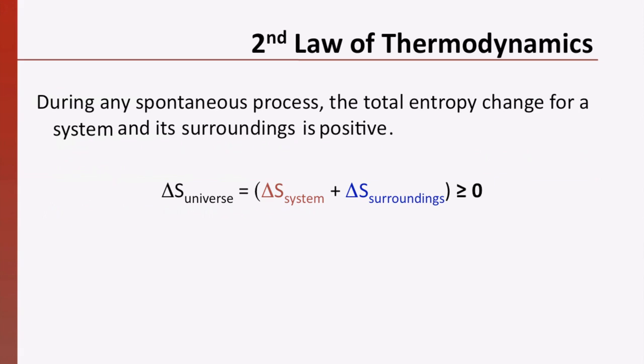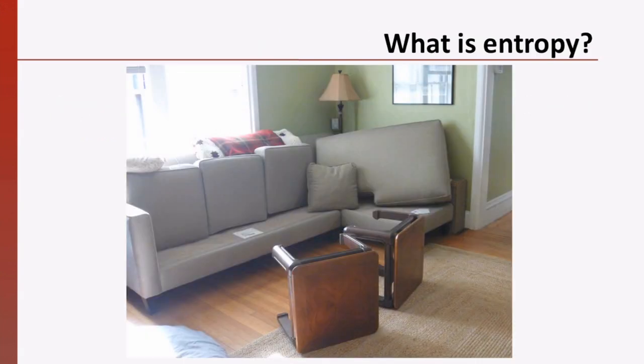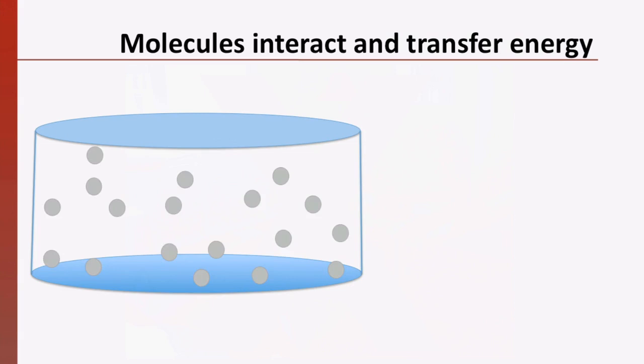The second law of thermodynamics states that during any spontaneous process, the total entropy change of a system and its surroundings is positive. In other words, the entropy of the universe, that is, the system plus surroundings, can only increase. But what is entropy? Is entropy a magical force that overturns your furniture and creates havoc in your office or home? No. Entropy is a measure of the number of ways energy can be distributed in a system of molecules.